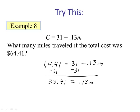Solving for m, we have to subtract 31 from both sides. So we have 33.41, and that equals 0.13m. To get m by itself, we have to eliminate the 0.13, so we are going to divide by 0.13. So our answer is 257 miles.